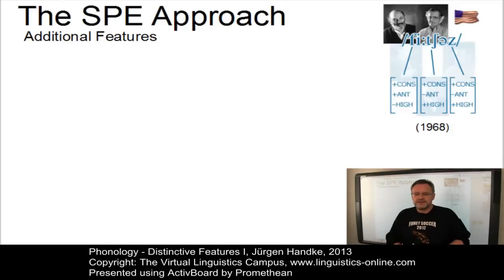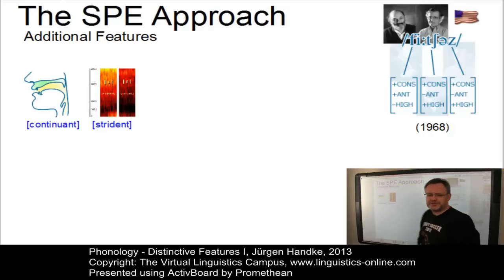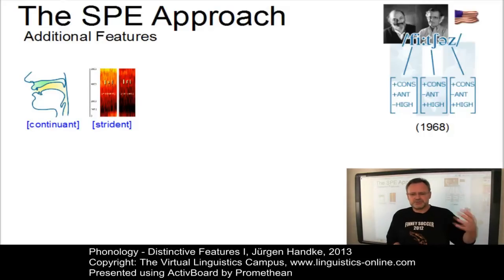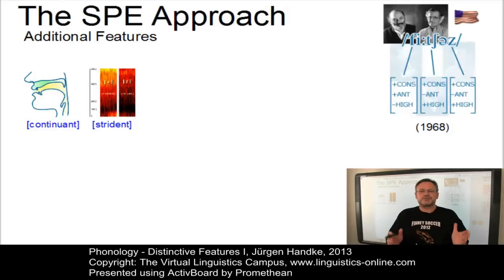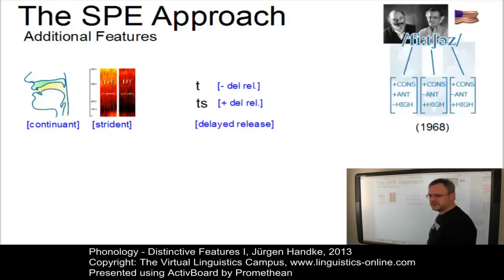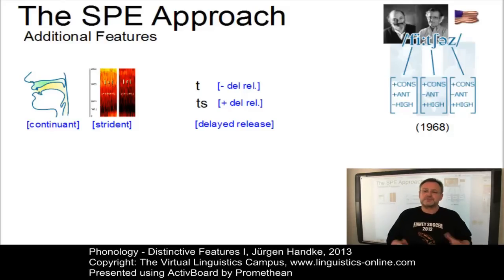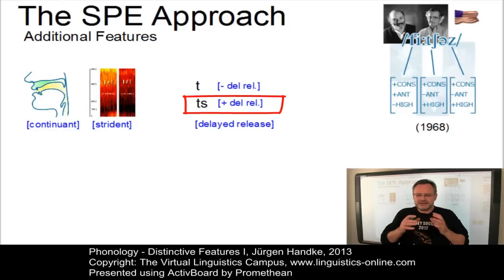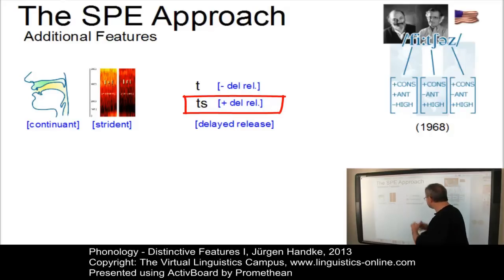Additional features in the Sound Pattern of English approach were taken over from Jakobson, for example the features continuant and strident. Whereas continuant correlates with the distinction between plosives and non-plosives, strident distinguishes noisy fricatives from less noisy consonants. Chomsky and Halle also added the feature delayed release, introduced to distinguish plain plosives from affricate consonants. Affricates involve a delayed release of the oral closure due to the friction component preceding the plosive, and are thus defined as plus-delayed-release.